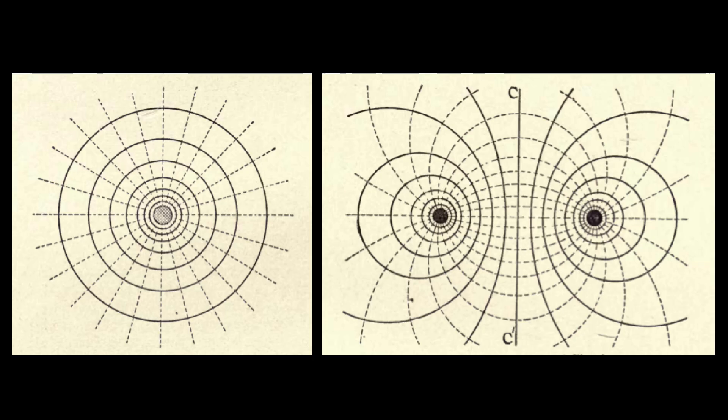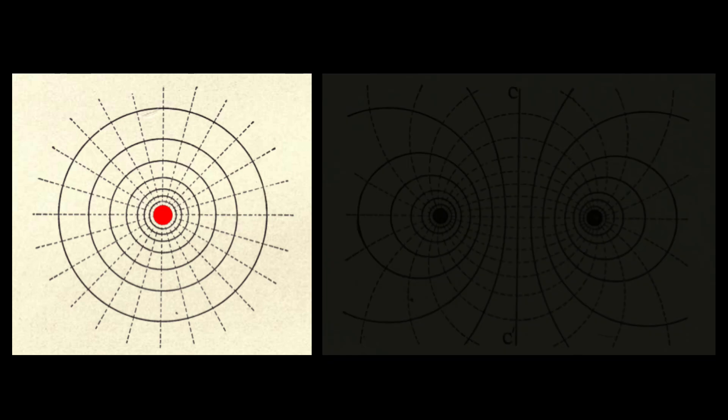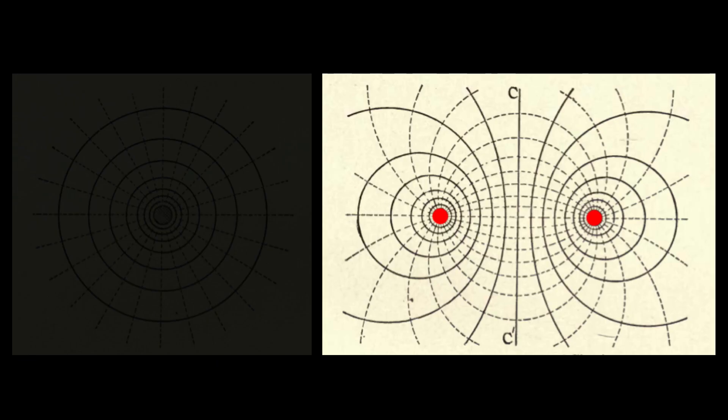These are cross sections of the electric fields of a single conductor and a system of conductors. The conductors are the black holes in the images, which act as poles of the circuit. In the single conductor, the poles are focused on the center, with one pole being behind the other. This is similar to the polar projection in volume one of this series, where the north pole is the center and the south pole is the outer ring. In the system of conductors, both poles are represented by black holes.